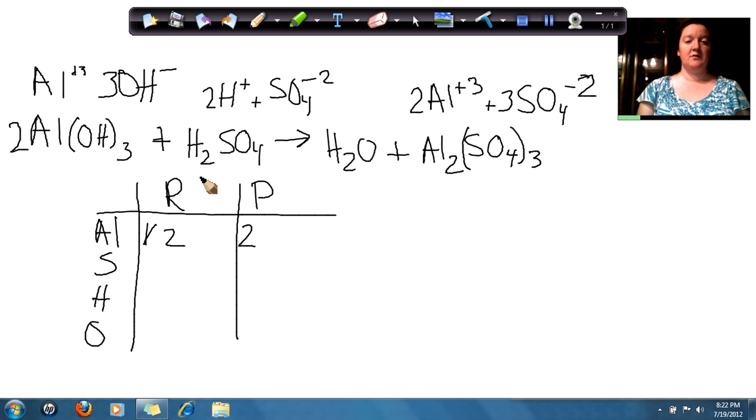Now if we look at the sulfur, on this side our sulfur we only have one. But on this side our sulfur, we have a three outside. So three times the S, which is only one, gives us three. So that means that we need to change the coefficient in front of our sulfuric acid to three. So now we have three sulfurs.